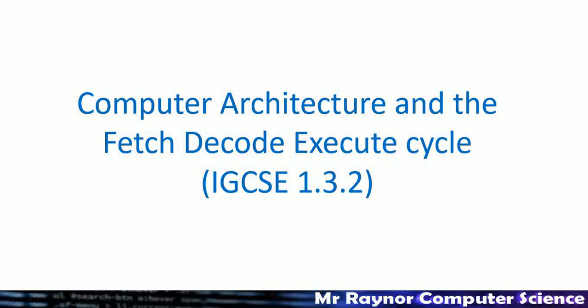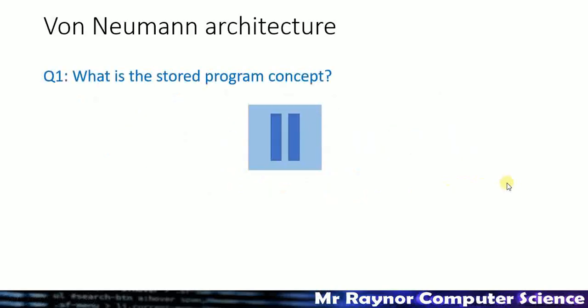In this video we're going to look at the topic of computer architecture, which basically means how the CPU and the RAM work inside a computer, and we'll also talk about the fetch-decode-execute cycle. This video is mainly aimed at students of the iGCSE course, specification 0.1.3.2, but a lot of the content applies to any GCSE in computer science. We're going to have a series of questions and I would encourage you to pause the video, then see if you can answer the question and then unpause to see whether you got the answer right.